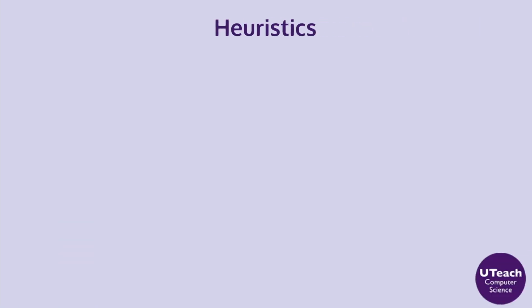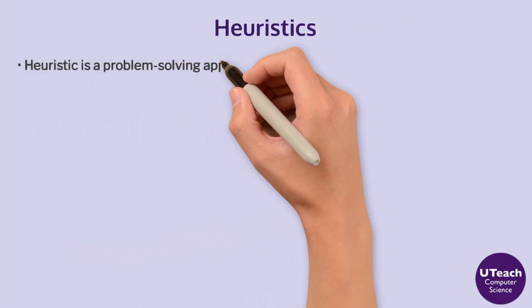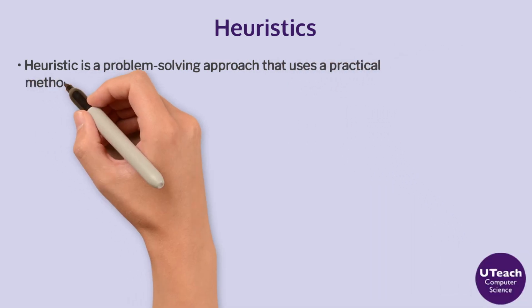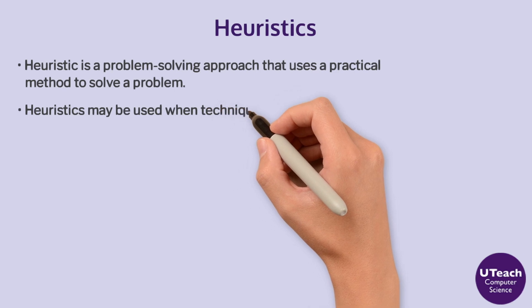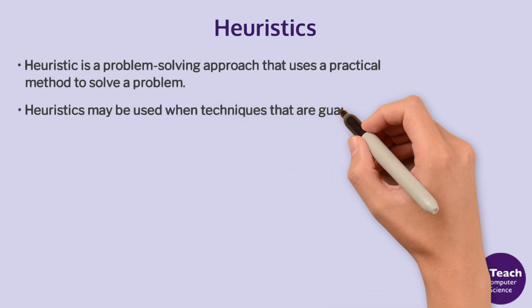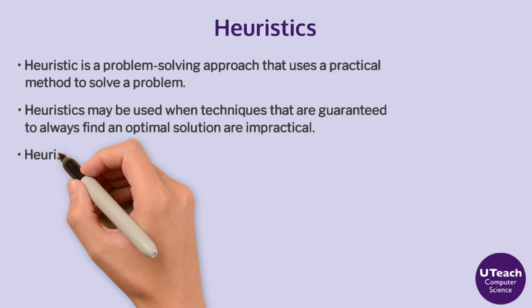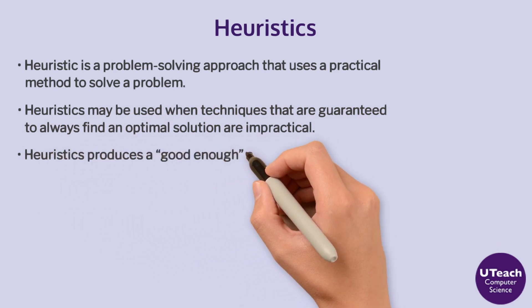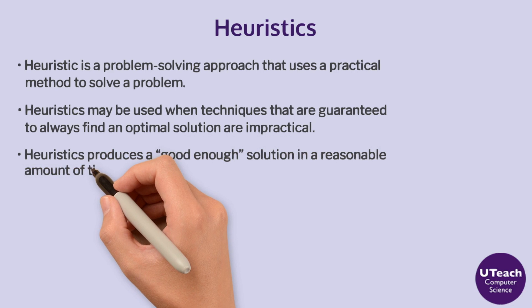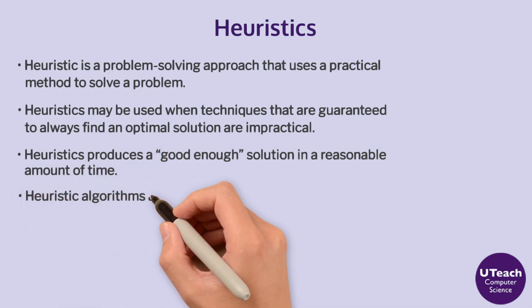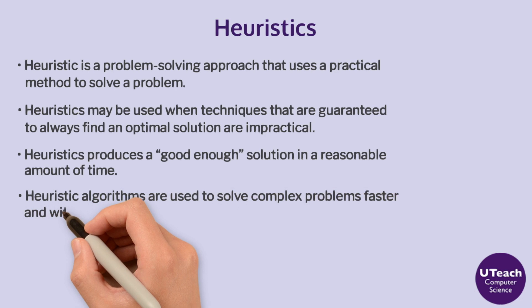To recap heuristics: A heuristic is a problem solving approach that uses a practical method to solve a problem. Heuristics may be used when techniques that are guaranteed to always find an optimal solution are impractical. Heuristics produce a good enough solution in a reasonable amount of time. Heuristic algorithms are used to solve complex problems faster and with less computational resources.